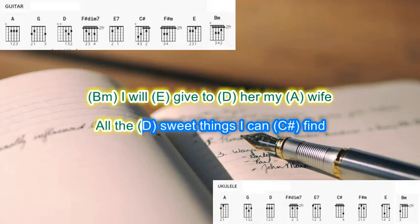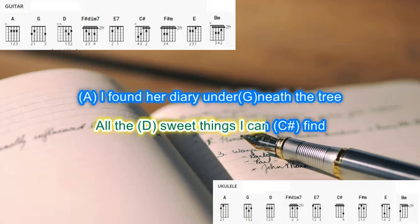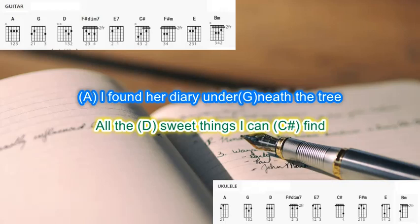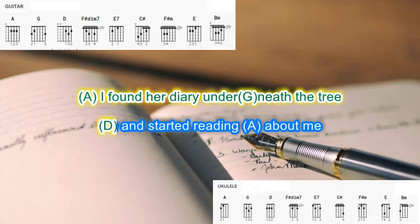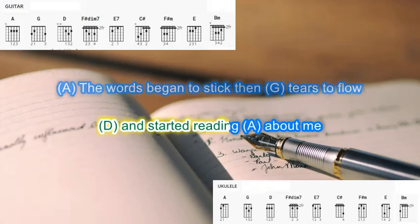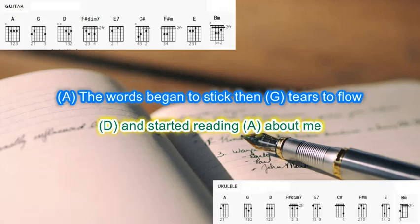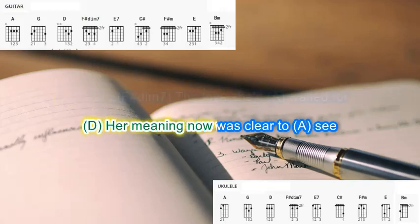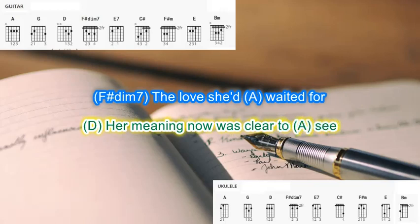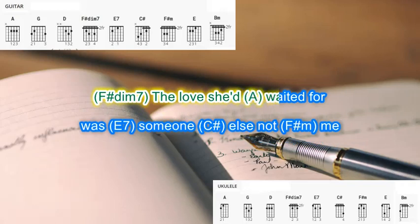I found a diary underneath the tree and started reading about me. The words began to stick, then tears to flow. Her meaning now is clear to see. The love she waited for, was someone else, not me?